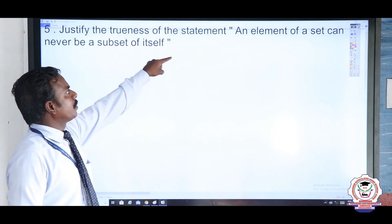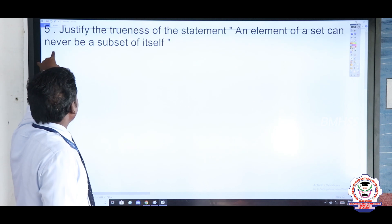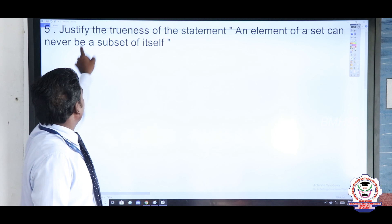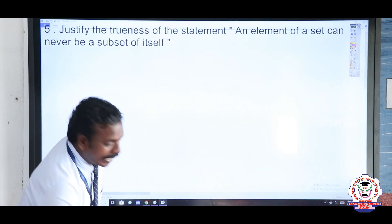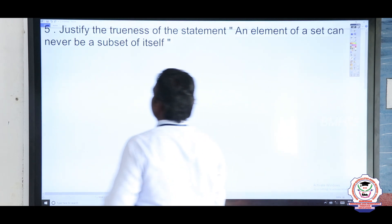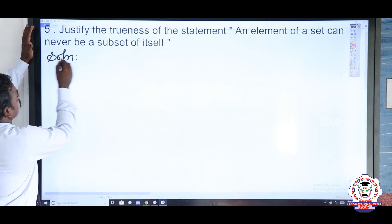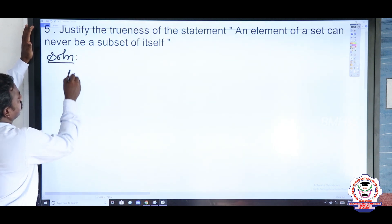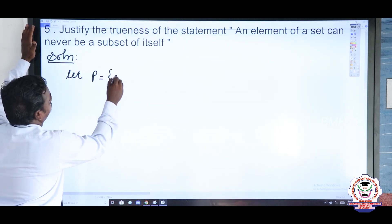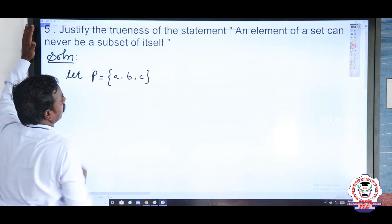Justify the trueness of the statement: An element of a set can never be a subset of itself. Let us consider a set. In the solution, let set P = {A, B, C}. Let us assume it.